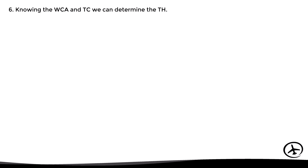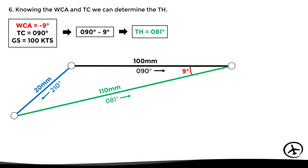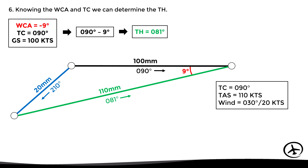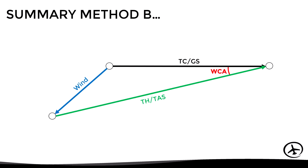Knowing the wind correction angle and the true course, we can determine the resulting true heading, which would be 081. So this triangle tells us that to fly on a desired true course of 090 degrees with a true airspeed of 110 knots and a wind of 030 at 20 knots, we would need to fly with a true heading of 081, and we would achieve a ground speed of 100 knots.